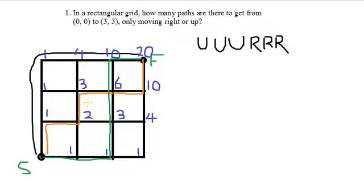Similarly, the orange path is going to be up, right, up, right, right, up. And the green path is right, right, up, up, up, right.